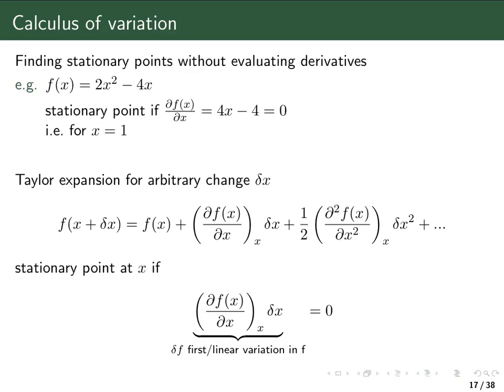But now let's try a different way. Let's look at the Taylor expansion of f(x) for an arbitrary change δx — an arbitrary step away from f(x). The Taylor expansion around x gives us the function value at x, plus the derivative evaluated at x times the step length δx, plus one-half the second derivative times the step length squared, and so forth.